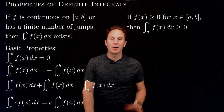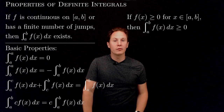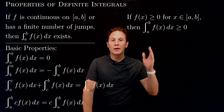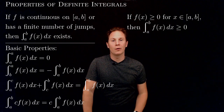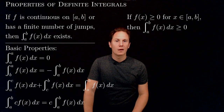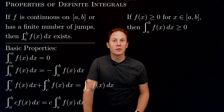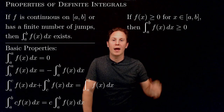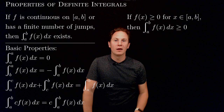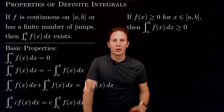Further properties are as follows. If f(x) is non-negative — greater than or equal to zero — along this closed interval, then its definite integral along this interval is also non-negative. This expresses the fact that the graph of the function is on or above the x-axis, therefore the area under the graph of the function is a positive area.